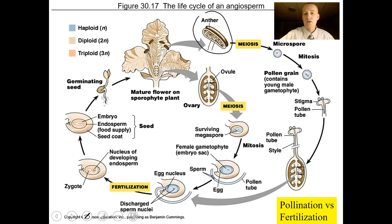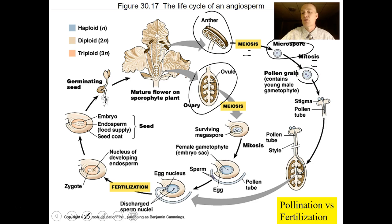Inside the anther there are cells called microspore mother cells that are going to undergo meiosis to produce microspores. These microspores will undergo mitosis to form a pollen grain, which is the mature male gametophyte. It's reduced down to three cells. This pollen grain will eventually make its way to the stigma of the female part.